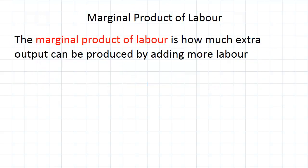Marginal productive labour quite simply is just how much extra output you get by adding more labour. We can show this pretty easily with an example.